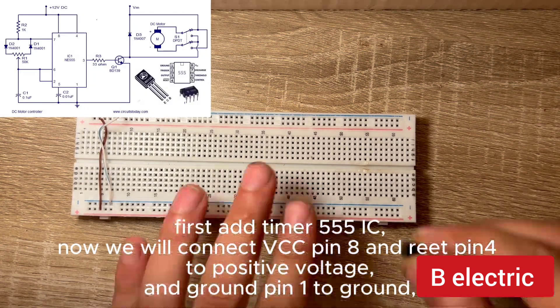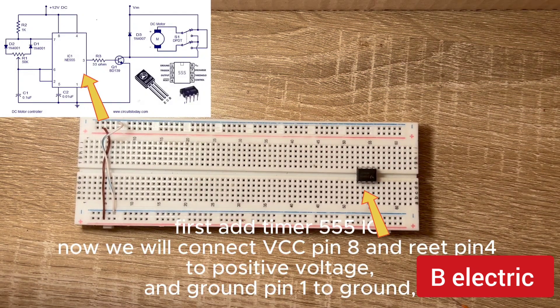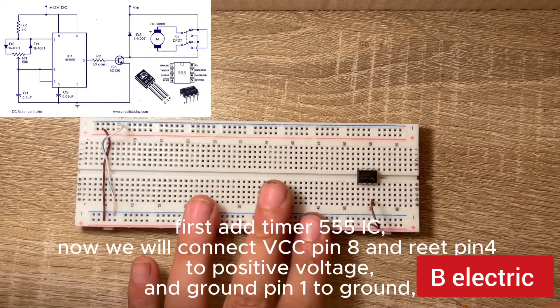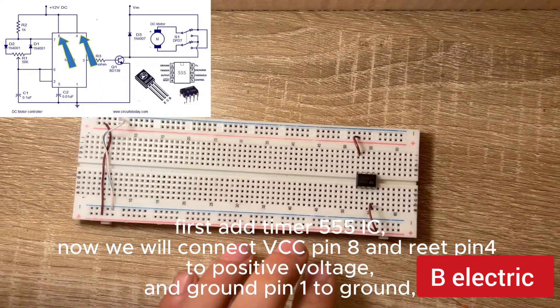Connections. First add timer 555 IC. Now we will connect VCC pin 8 and reset pin 4 to positive voltage, and ground pin 1 to ground.